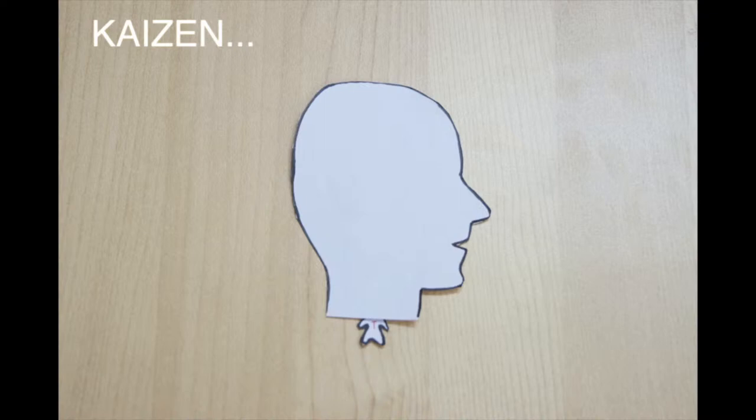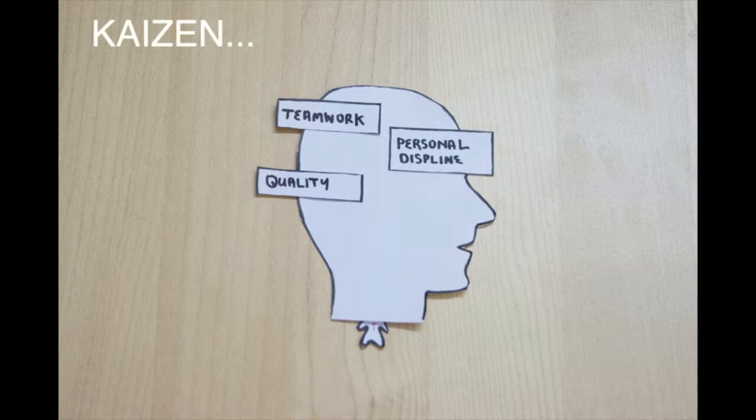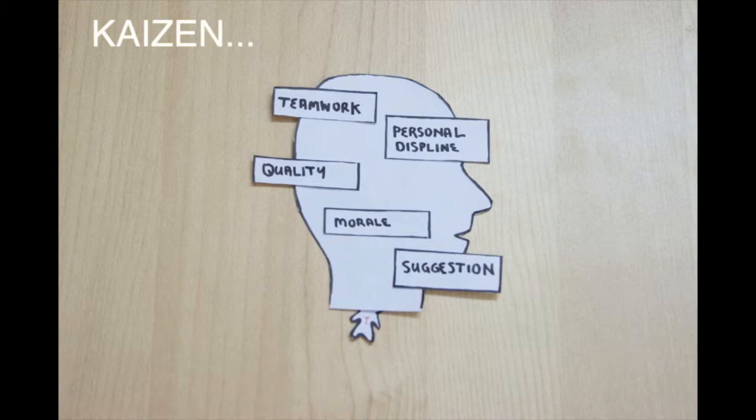Core values of Kaizen include teamwork, personal discipline, quality circles, improved morale and suggestions for improvement. This will not only improve Toyota's employees but also the productivity of the organization as a whole.